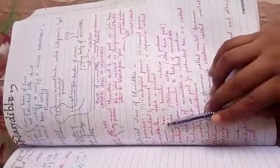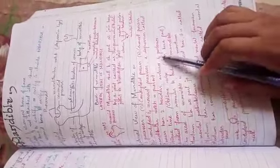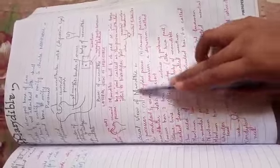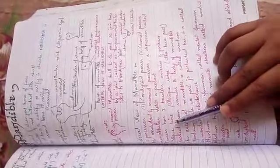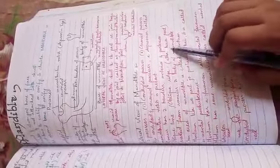Between condyloid and coronoid process is a depression which we call mandibular notch. We are working on all the diagrams of this. The ramus has two borders, anterior and posterior. Then we have an oblique region, this is the part directed from ramus to body of mandible.